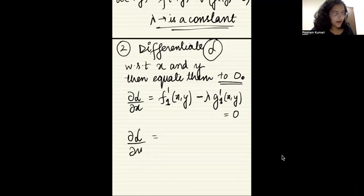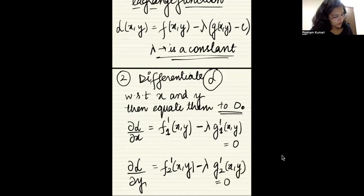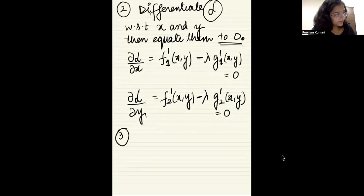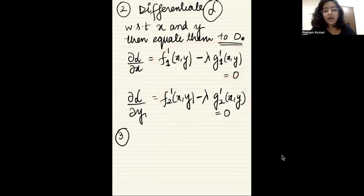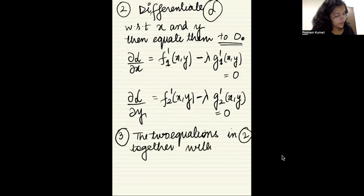Similarly, taking the partial derivative of L with respect to y gives you f prime two(x, y) minus lambda times g prime two(x, y), and you equate this to zero as well. These two equations from step two, together with the constraint, give you your system.